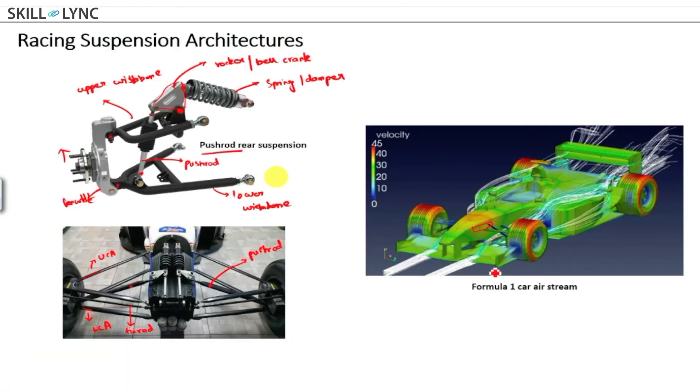These are two separate architectures. You can see they still have the same components: the upper and lower wishbones, the push rod, and the spring damper system which is connected to a rocker or bell crank.